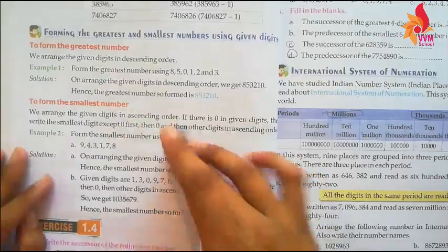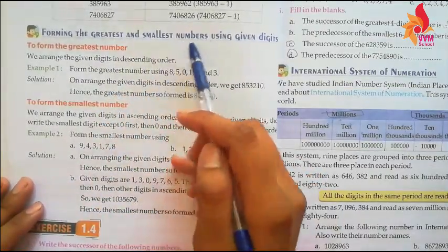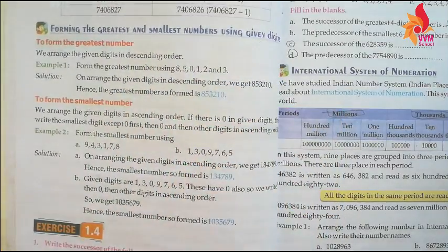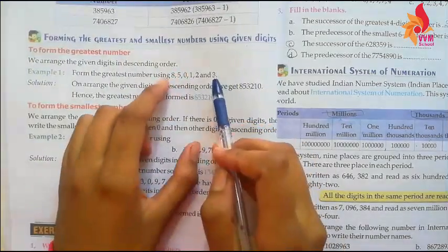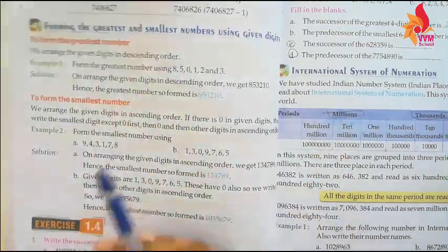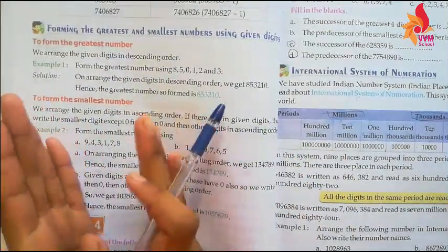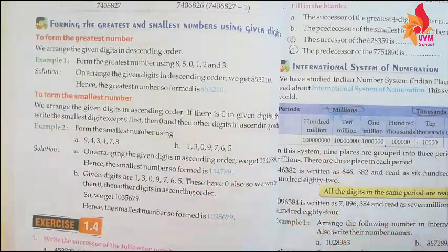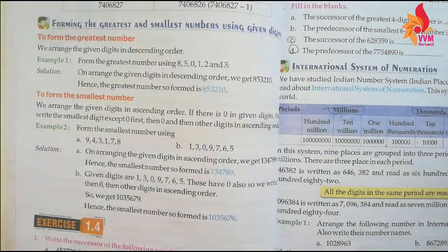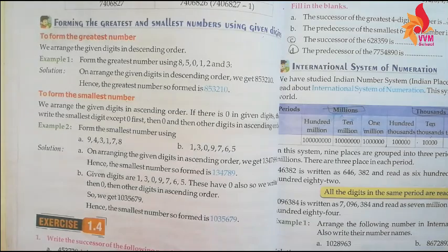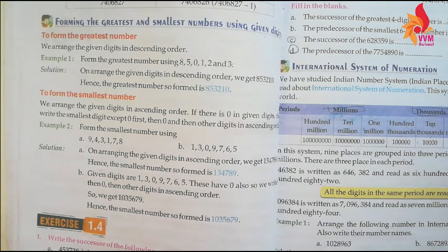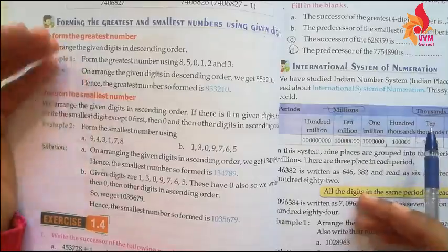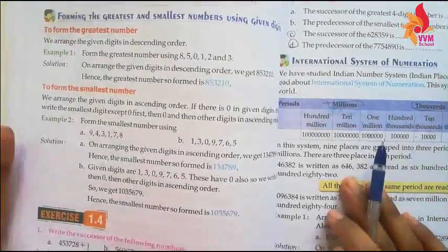Then comes forming the greatest and smallest number using given digits. To form the greatest number, arrange the digits in descending order. To form the smallest number, arrange the digits in ascending order. If there is a 0 in the digits, when forming the smallest number, do not write 0 in the first place — write it in the second place.